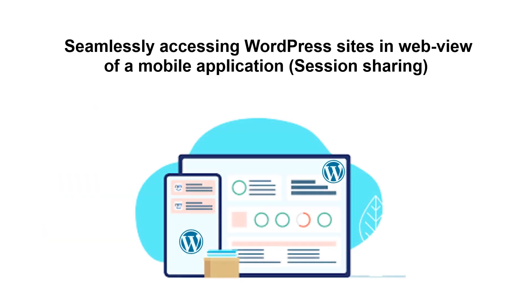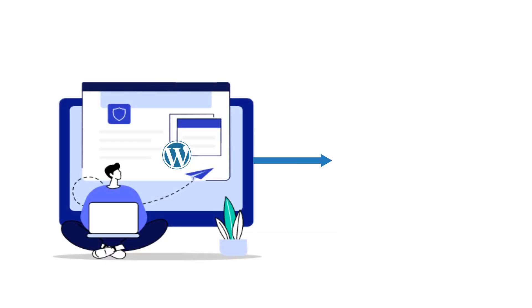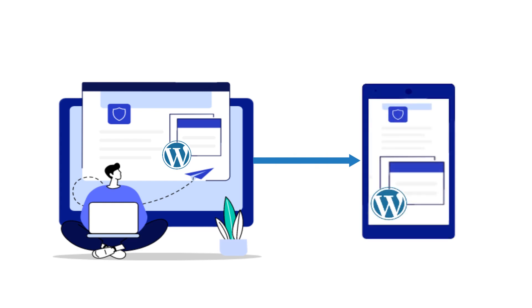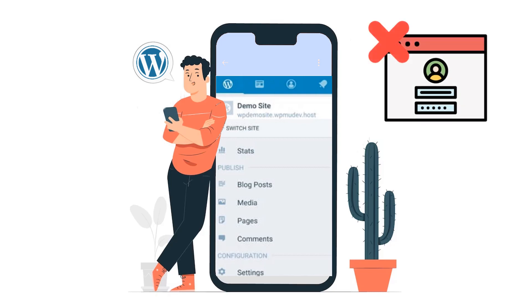Let's look at the use case for seamlessly accessing WordPress sites in the web view of a mobile application. WordPress can be accessed through a mobile application's web view by sharing sessions. A user can access the WordPress site without entering their credentials again if they have already logged into the mobile application.